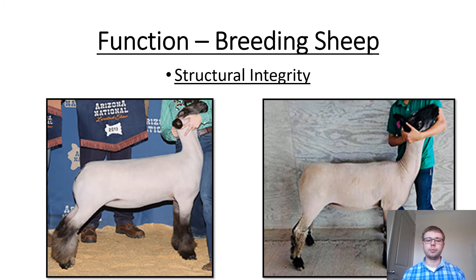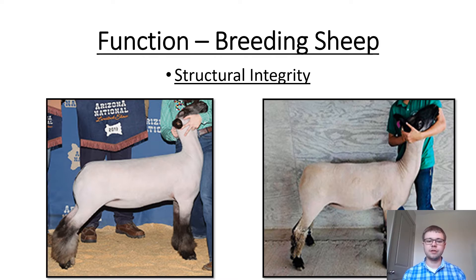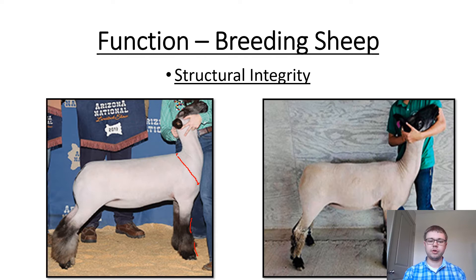Function is our first priority in breeding sheep, and when we think about function, we must talk about structural integrity. Just as with beef cattle, structural integrity plays a role in longevity within the flock. Angles on sheep are very similar to beef cattle — at the top of the shoulder coming down to the point of the shoulder, we need a nice 45-degree slope. With that slope, we see a gentle roll at the knee and into the pastern, and everything should tie in well at the top of the shoulder with the head and neck staying upright when they move.